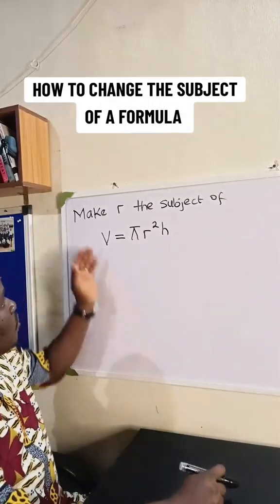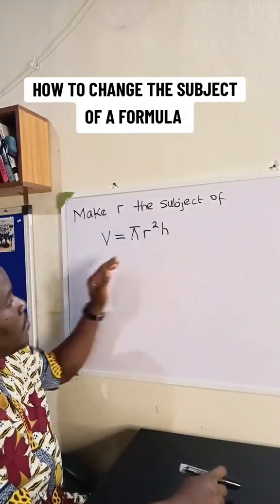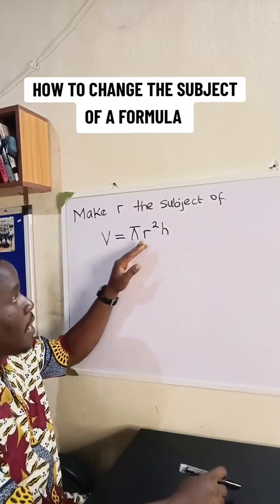Hey guys, let's look at this simple question I have here. We are told to make r the subject of V is equal to pi r squared h.